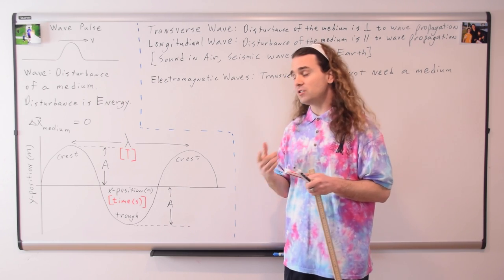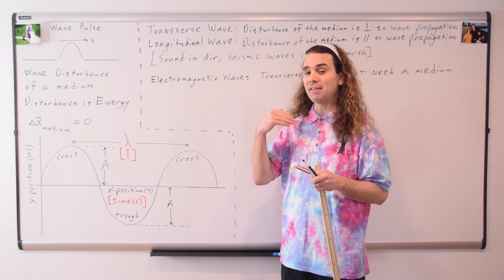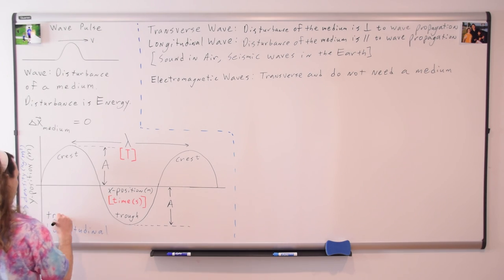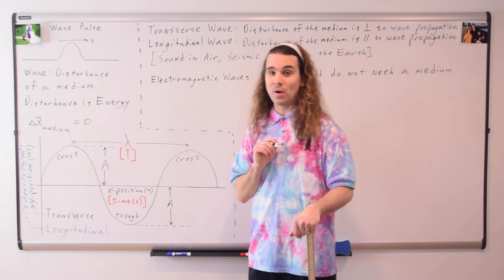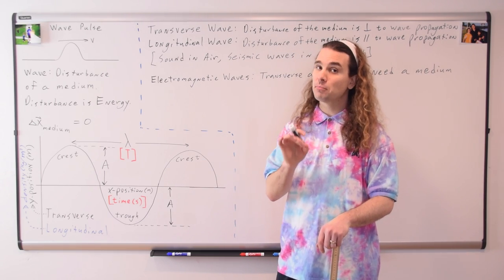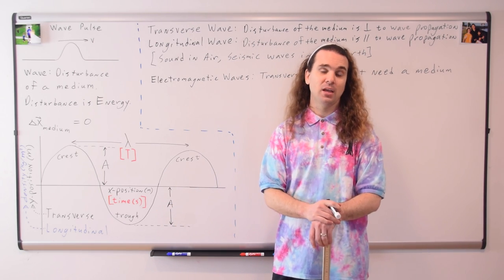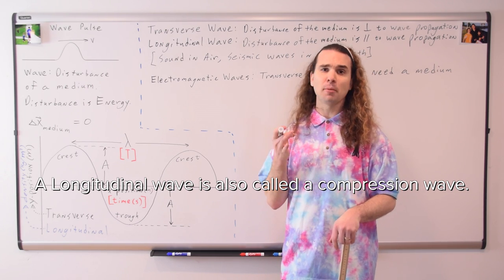This is a graph of a transverse wave. What change could I make to the graph to make it a graph of a longitudinal wave? Change the y-axis to density. For a longitudinal wave, you have density on the y-axis. Therefore, a crest is a location of high density or compression, and a trough is a location of low density or rarefaction. That is why a longitudinal wave is sometimes called a compression wave.